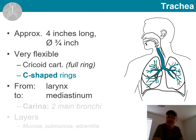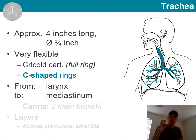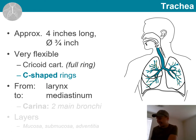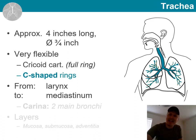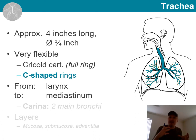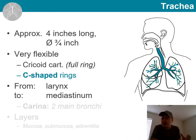All other cartilages here are C-shaped cartilage rings. This would be a good time to consider why this is the case. These cartilage rings are there to strengthen the structure and keep the airway open — which is super important. But they are not complete rings, and there is a very good reason for that.